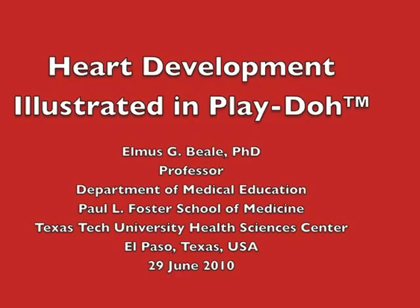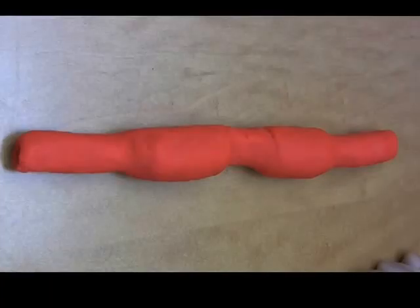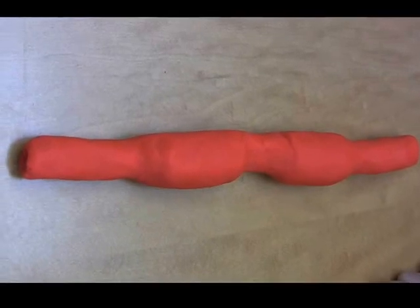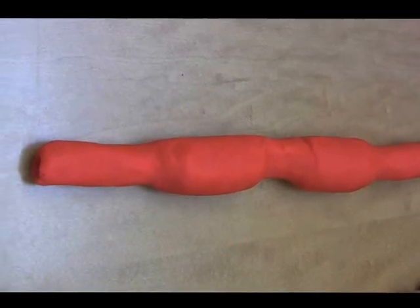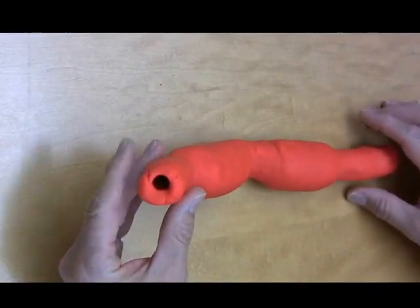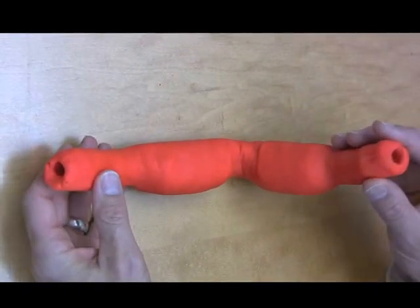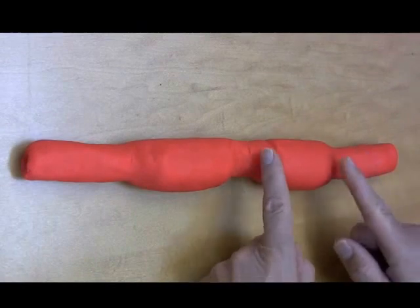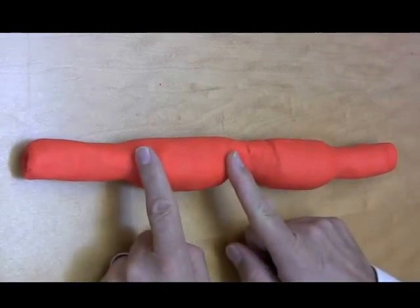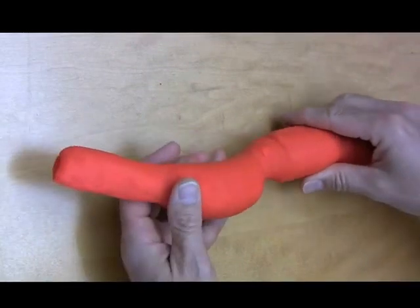This video will be most effective if used in conjunction with a good quality textbook of embryology. This red model represents the heart tube roughly as we might see it on day 22 of development. At this end is the outflow tract, at the other end is the inflow tract, future atrium, future ventricles. This is the left side of the embryo — we're looking from the belly.